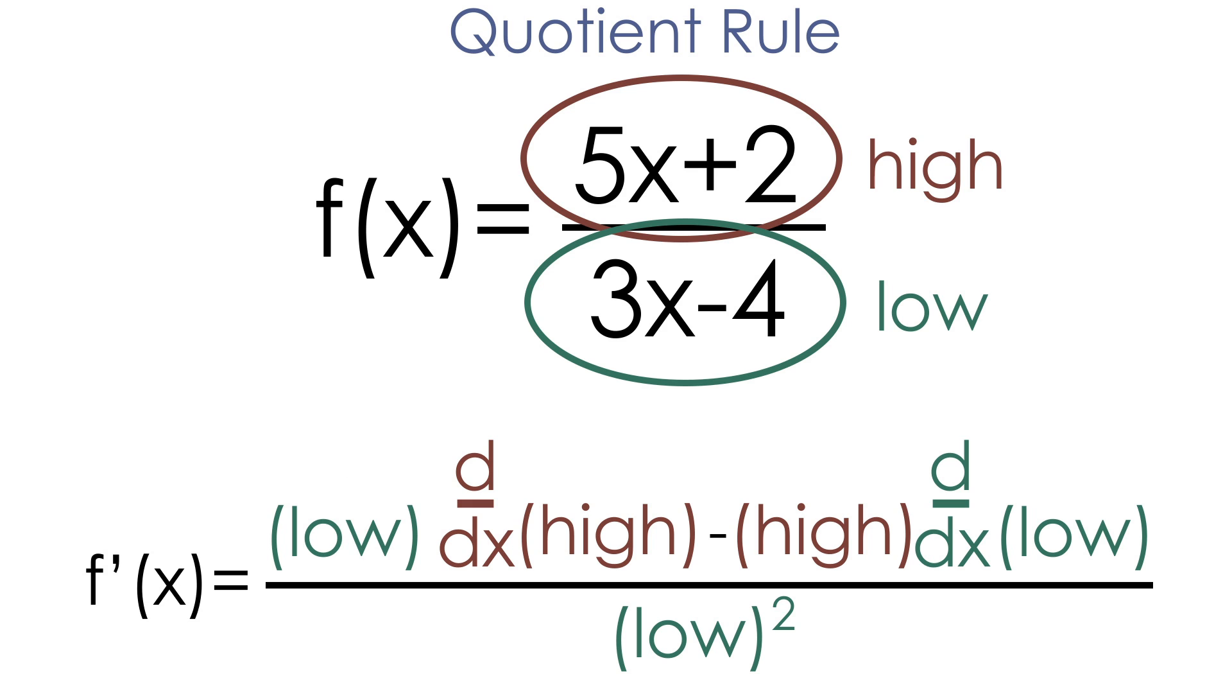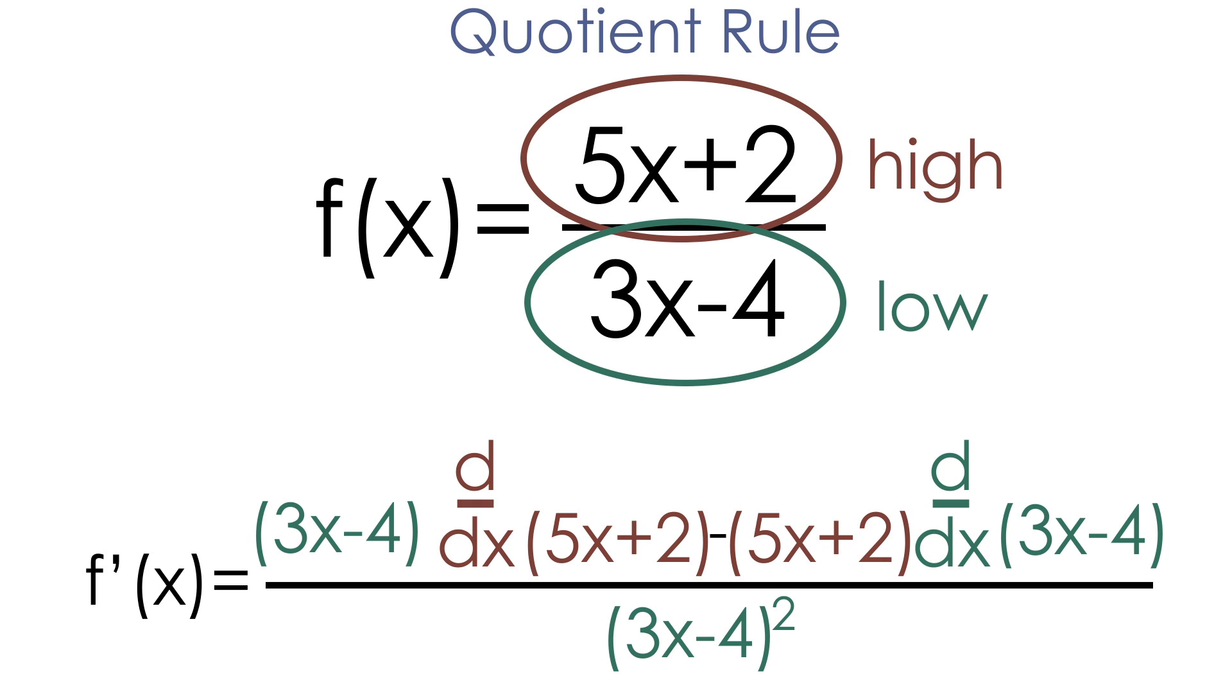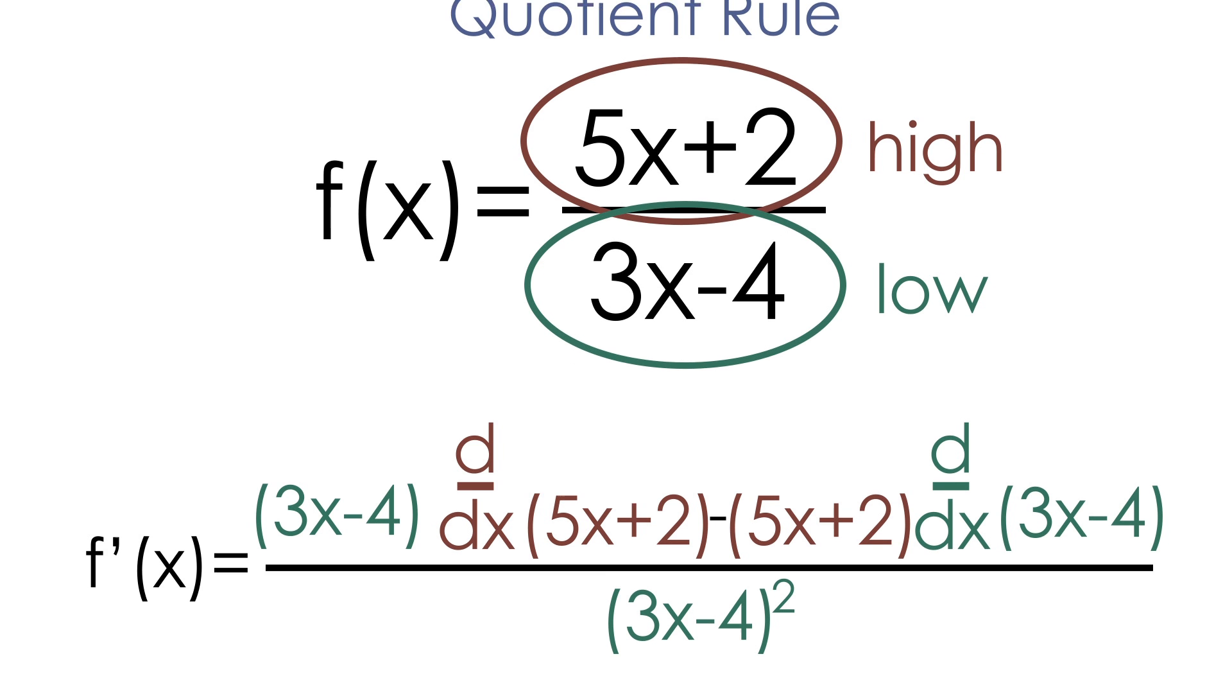And this is super simple. Every time we see the word high, we have to plug in our high of 5x plus 2, and every time we see the word low, we have to plug in our low of 3x minus 4.